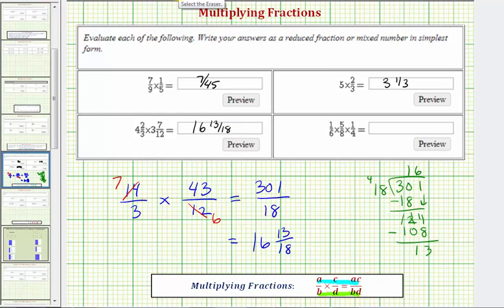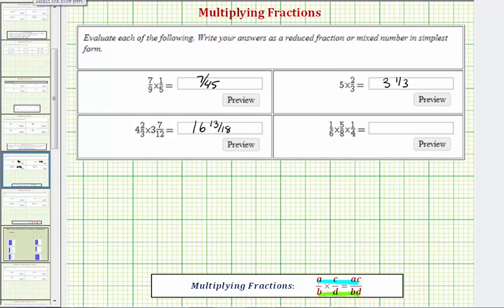And now for the last example, we have the product of three fractions, we have one-sixth times five-eighths times one-fourth. Notice there are no common factors between any of the numerators and any of the denominators, so we multiply. The numerator is going to be one times five times one, that's five. The denominator is going to be six times eight times four. Well six times eight is equal to forty-eight, and forty-eight times four equals one hundred ninety-two. So our product is five over one hundred ninety-two.